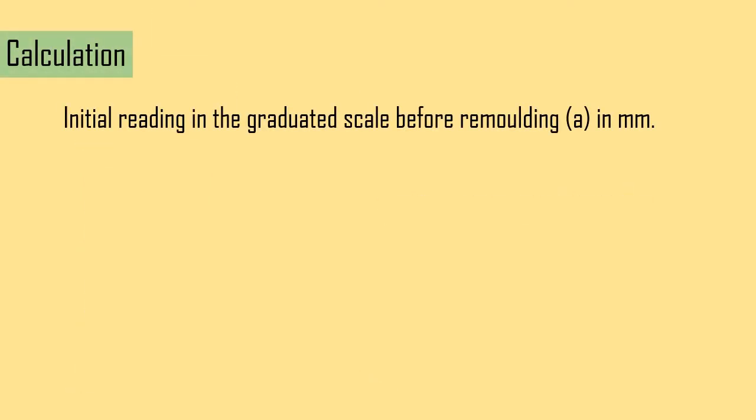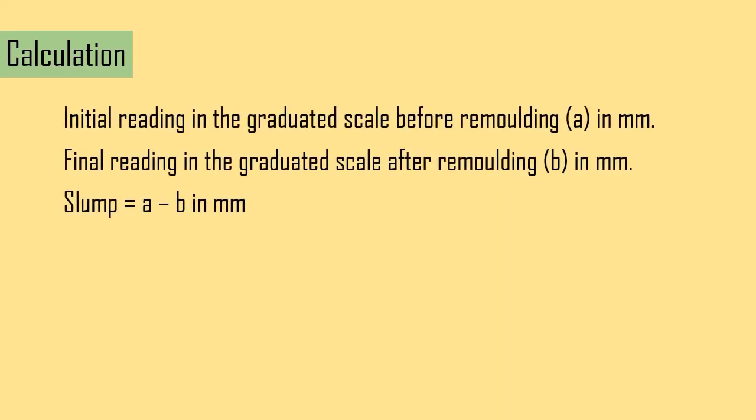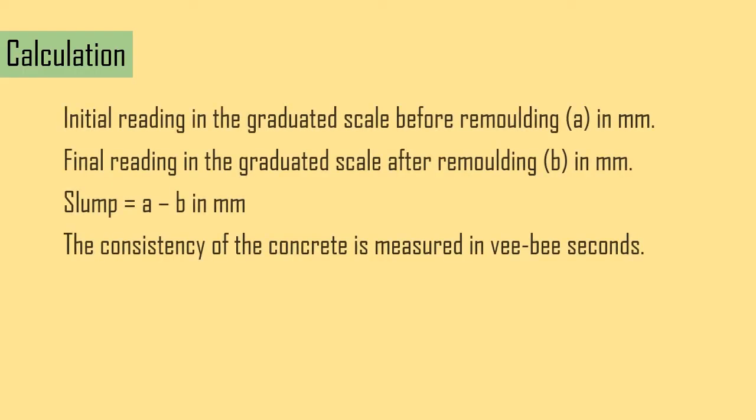Calculations in VB consistometer: Initial reading in the graduated scale before remolding A mm, final reading in the graduated scale after remolding B mm. Slump value is equal to A minus B mm, and the consistency of the concrete is measured in VB seconds.